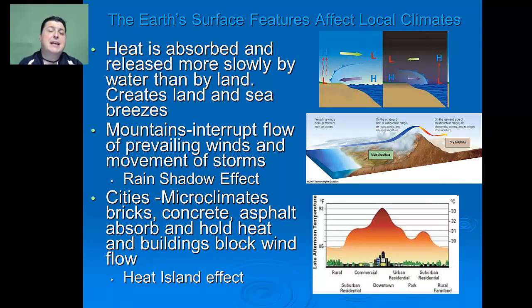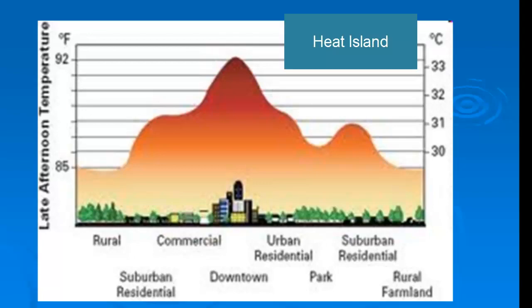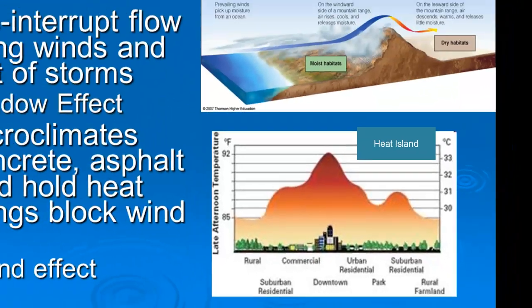Cities, as a result of the materials they're made out of — like brick, concrete, and asphalt — tend to absorb and hold heat. Tall buildings also tend to block wind and other air flow. As a result, the temperature around cities seems to be much higher than outside of the city. This is referred to as the heat island effect.